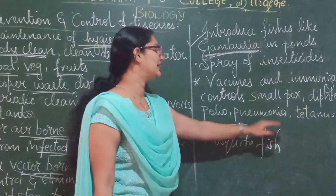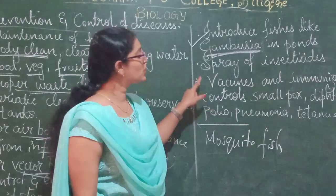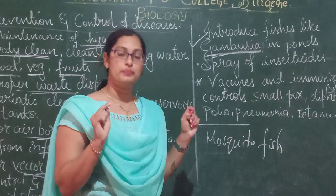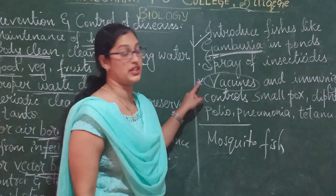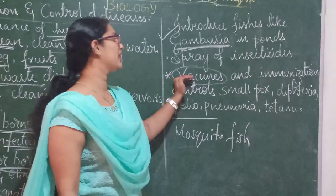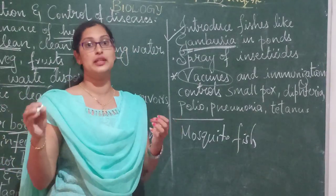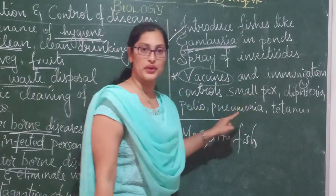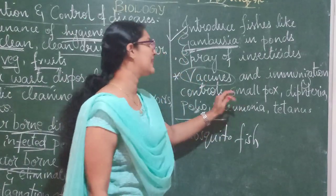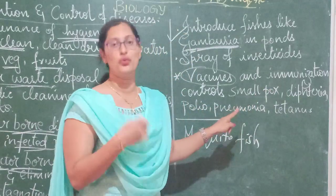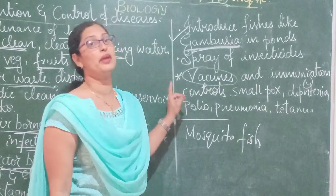Next, vaccines and immunization control many diseases like smallpox, diphtheria, polio, pneumonia, and tetanus. A vaccine is a half-cured or purely cured microorganism given in the form of injections. Immunization means that once you are given a vaccine, for a longer period of time your body will be resistant to that particular microorganism causing disease. Vaccination keeps away diseases like smallpox, diphtheria, polio, pneumonia, and tetanus.